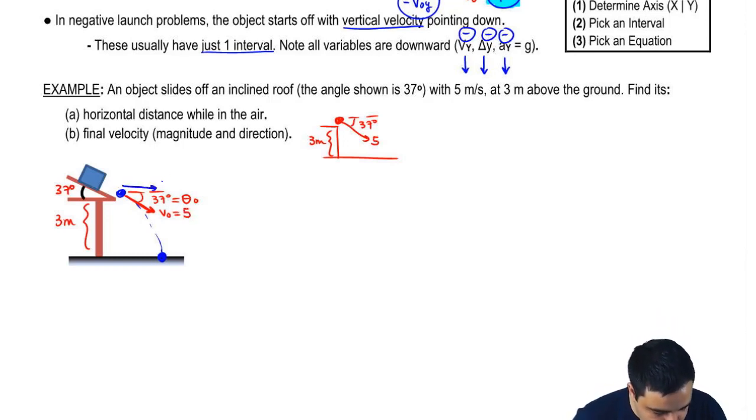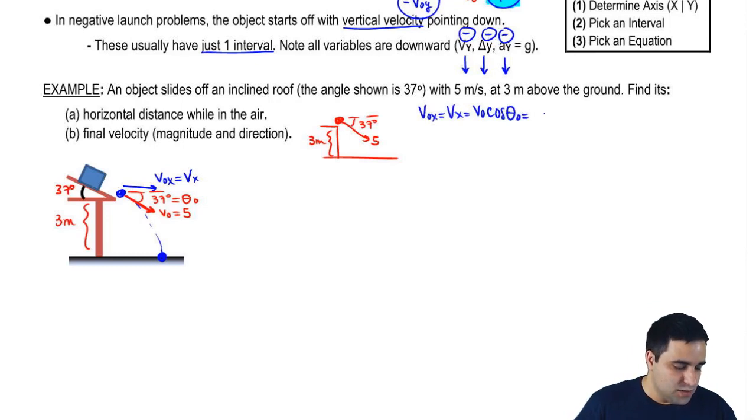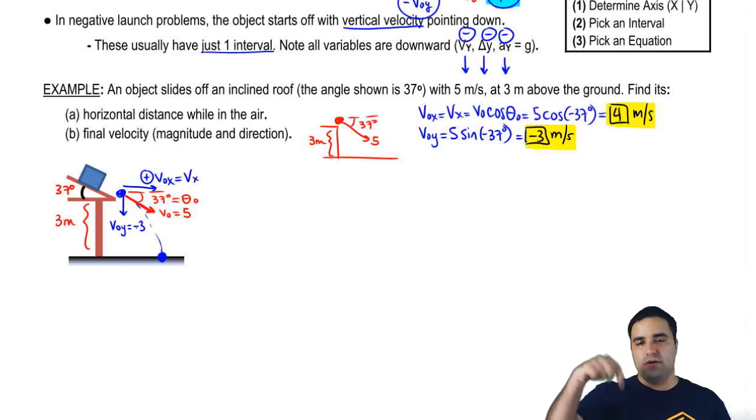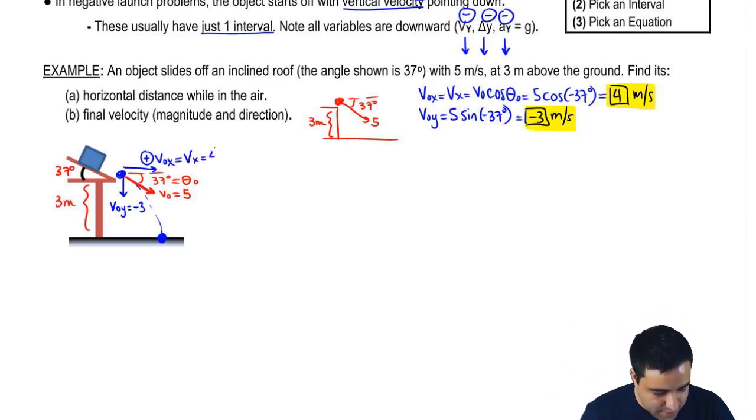I do have to decompose this into v initial x, which again is just my vx. V initial x, or simply vx, is v initial cosine of theta initial. So it is five cosine of negative 37. We should expect this to be a positive number, and if you do this, you get a four. So v initial on the y-axis is five sine of negative 37, and the calculator will give you a negative three, which makes sense because this velocity is negative, it's pointing down. So v initial y is negative three, and this guy is a four.